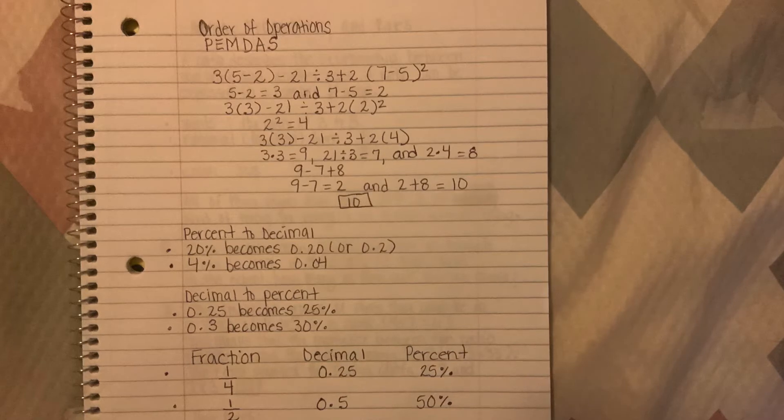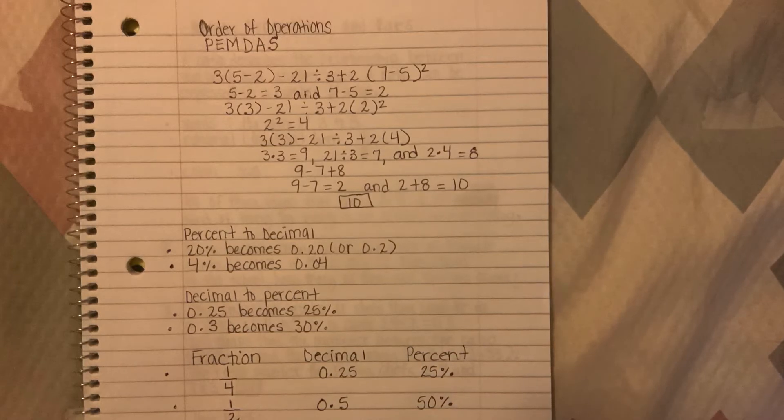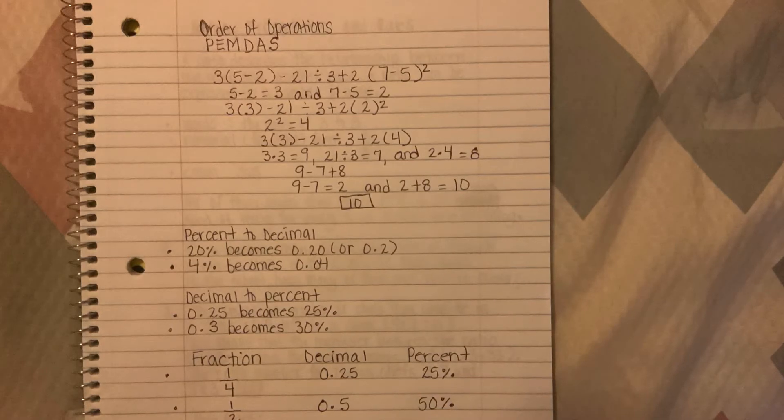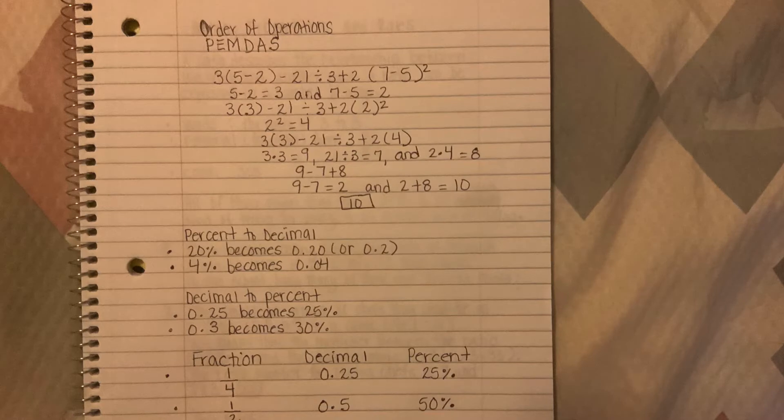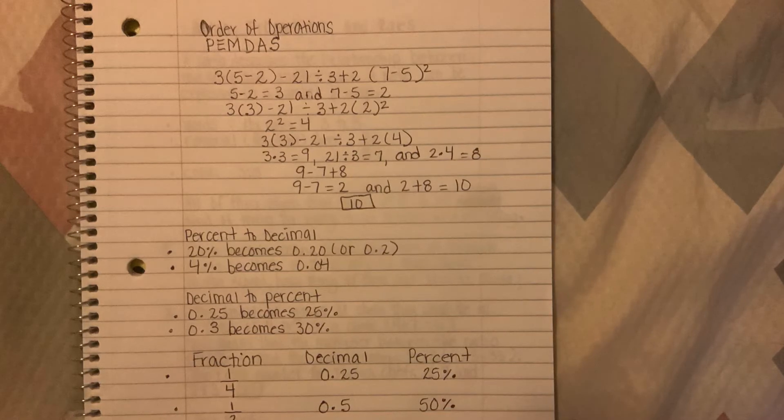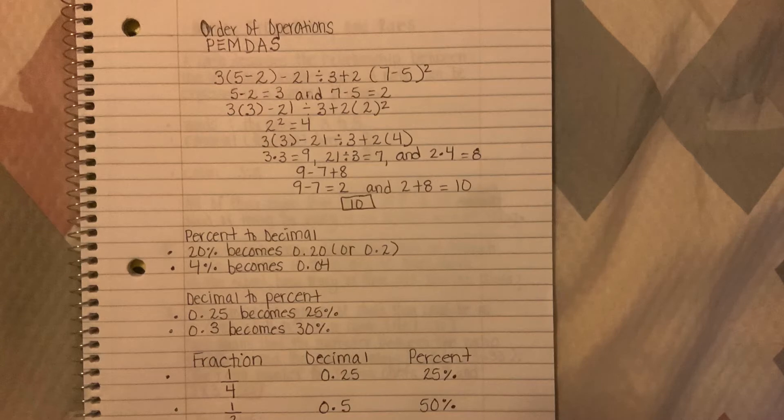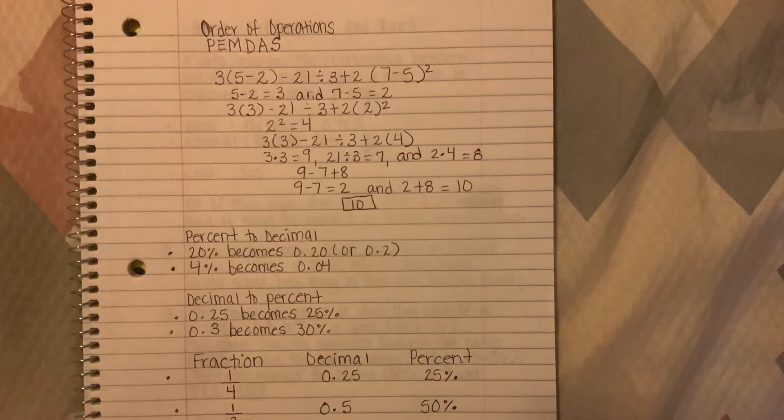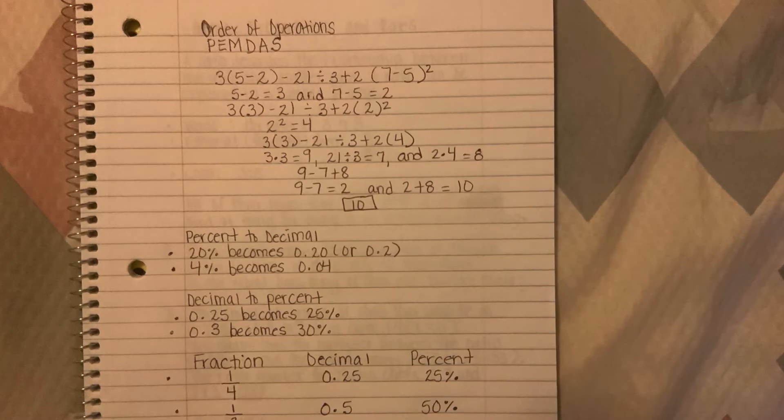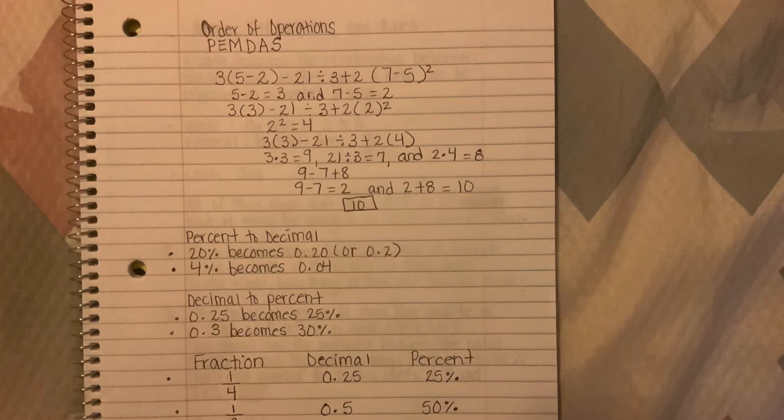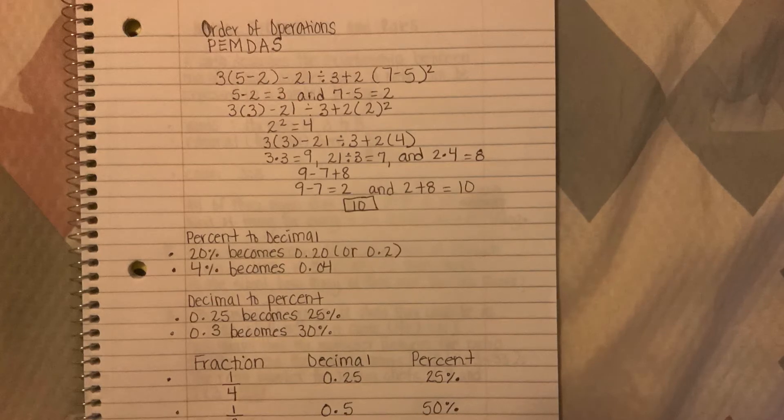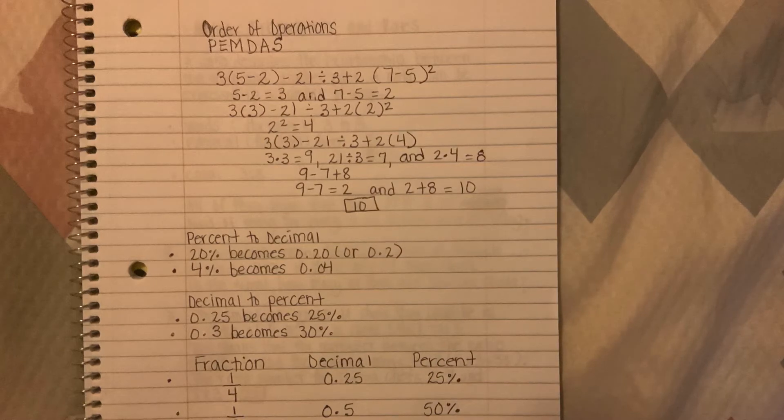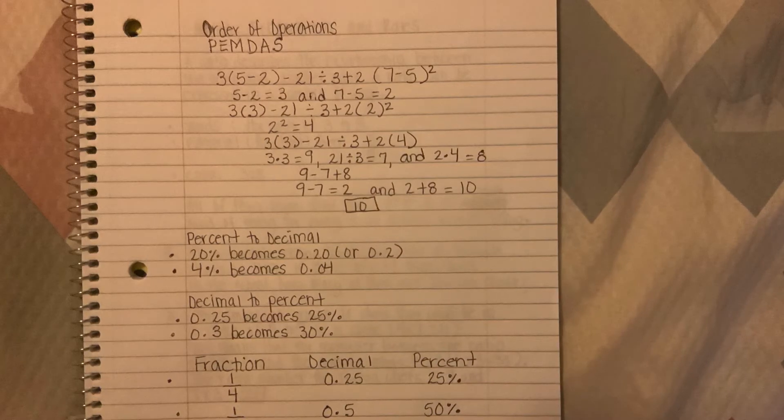For this first problem we have 3 times (5 - 2) minus 21 divided by 3 plus 2(7 - 5) squared. In solving it we gotta do the PEMDAS, so parentheses we have to solve first.